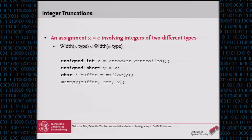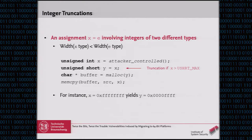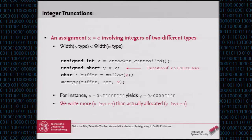Here we have a simple example where we receive an attacker-controlled value of type unsigned int, and then we do some allocation and a memcpy afterwards. If we assign a variable of unsigned int to a variable of type unsigned short, we get truncation if the value is larger than the maximum value of unsigned short.